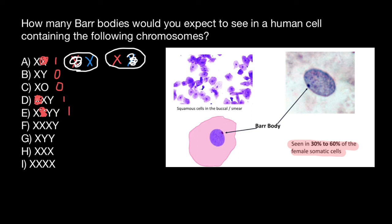To understand why, consider the size difference: the X chromosome is much larger, with about 1,000 genes on it, whereas the Y chromosome has fewer than 100 genes, and most of them are not that important — except for the SRY gene on the Y chromosome, which specifies maleness and is called the sex-determining region.